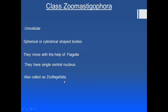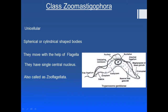This class is also called Zooflagellata. Looking at a picture, you can see: it is unicellular with a cylindrical body, a central nucleus, and a free flagellum with which it moves. Additionally, this class includes both blood parasites and intestinal parasites.